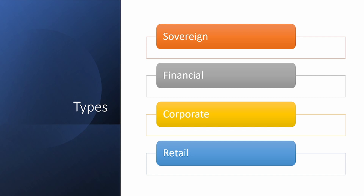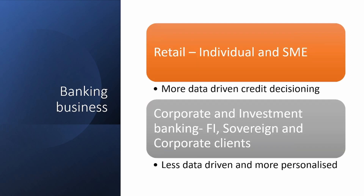We will see more about how these credits differ, both in terms of the product and the risk assessment. Banking business today is primarily of two types: retail business, which covers individuals and SMEs and is considered the more routine side, and corporate and investment banking, which is the more interesting side — involving financing of financial institutions, sovereigns, and corporate clients, as well as trading activities.